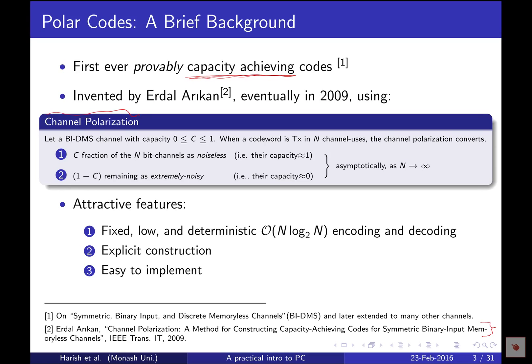Channel polarization refers to polarizing the given noisy channel into two extremes in terms of channel quality. What we essentially do is make channels either completely noisy or completely noiseless. We achieve this by taking n copies of the channel — corresponding to the n encoded bits transmitted — which can be mathematically described as using n copies of the channel, or equivalently n channel uses.